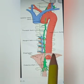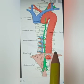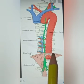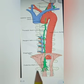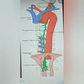The cisterna chyli is joined by the right and left lumbar trunks and intestinal lymphatic trunks. The lumbar trunks arise from the lateral aortic nodes and bring lymph from the lower limb, pelvic viscera, kidneys, suprarenal glands, testes, ovaries, and the deeper part of the abdominal wall.